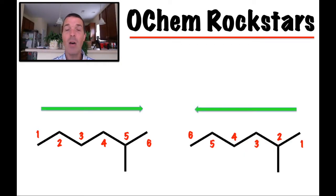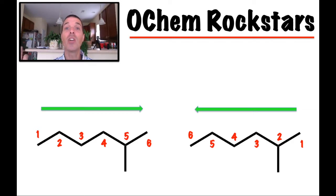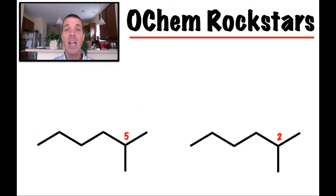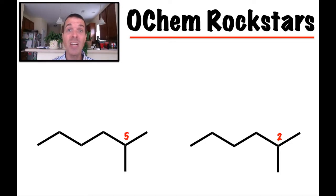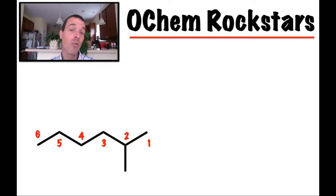Now let's talk about how to number the chain. You can go up, down, any direction — you want the longest chain. But it does matter how you number when you have a substituent. You can number left to right or right to left; the only thing that changes is what number the substituent lands on. According to IUPAC nomenclature, we want the substituent to have the lowest number. Between the two options — five or two — two is lower, so we number right to left.